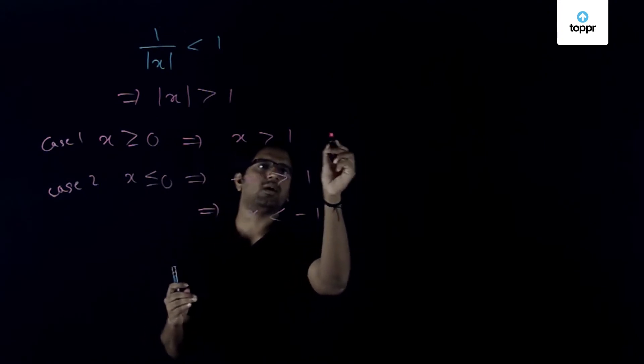So you combine all these things. In fact there are four inequalities and we need to take the intersection of all these inequalities. Combining these two we can say that x greater than 1 is the intersection of these two, and combining these two it is x less than -1.